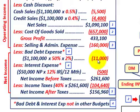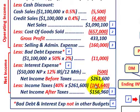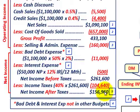Subtracting selling and administration expenses, bad debt expense, and interest expense from gross profit gives us net income before taxes of $261,600. Applying a 40% tax rate gives income taxes of $104,640. Subtracting that yields net income after taxes of $156,960. Everything below selling and administration expenses is really part of net income.